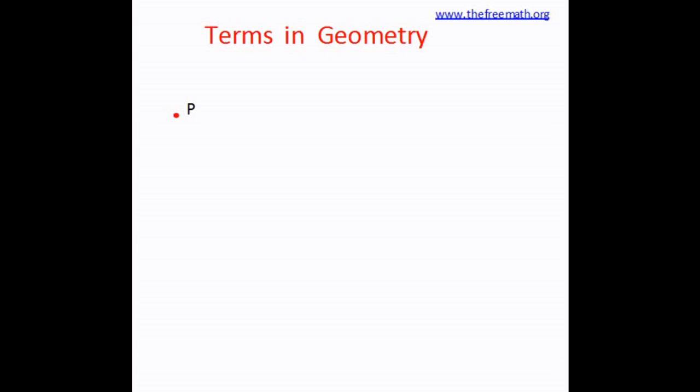Now the red dot you see here is called a point. Point is a very tiny or a very small dot. You can also draw a point on a piece of paper with a sharp pencil. Typically points are named with a capital letter. So in this case I have named this point as P.